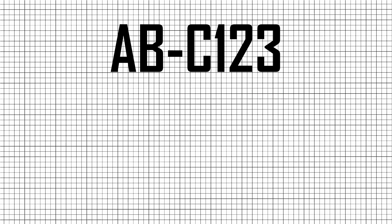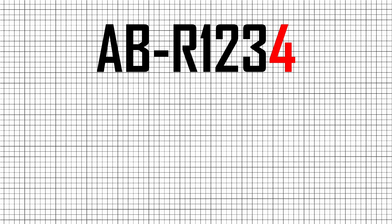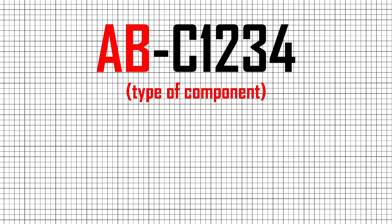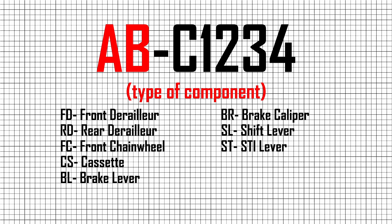Between 2014 and 2017, Shimano changed the codes for their components, adding another number to the mountain bike and trekking components: AB-C1234. And the letter R to the road components within the groupset: AB-R1234, with the exception of the Tiagra groupset. The first two letters, AB, indicate what type of component it is: FD for front derailleur, RD for rear derailleur, FC for front chainwheel, CS for cassette, BL for brake lever, BR for brake caliper, SL for shift lever, ST for STI (Shimano Total Integration), HB for front hub, FH for freehub body hub.